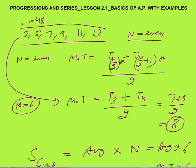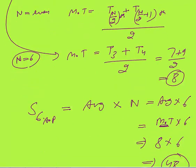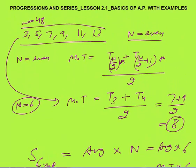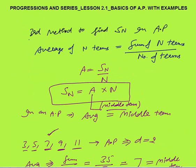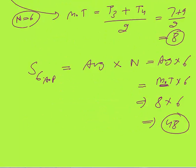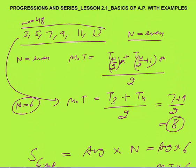So the advantage of this method is: if you know the middle term, you can always calculate the sum of n terms. When n is odd, the middle term is the n plus 1 by 2 th term. When n is even, the middle term is the n by 2 th term plus the n by 2 plus 1 th term, divided by 2.